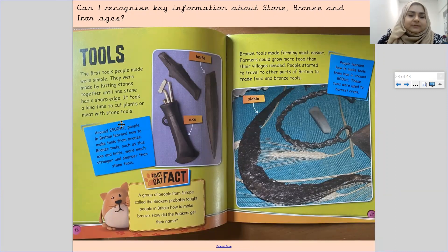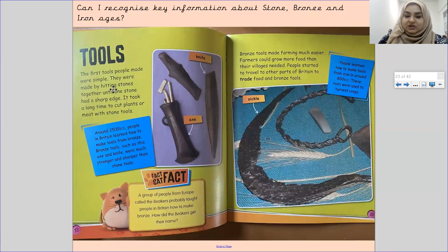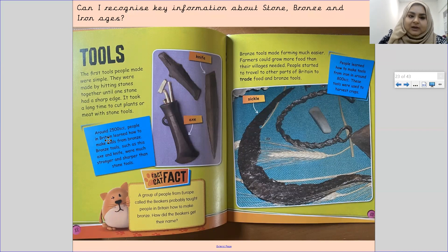The first tools people made were simple. They were made by hitting stones together until one stone had a sharp edge. It took a long time to cut plants or meat with stone tools. Around 2,500 BCE, people in Britain learned how to make tools from bronze. Bronze tools such as an axe and knife were much stronger and sharper than stone tools.